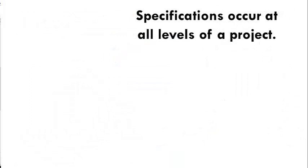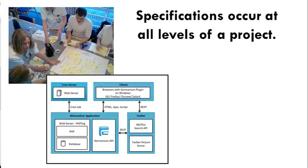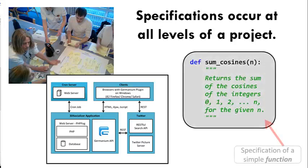Specifications occur at all levels of a project. For example, the team talks with the client to determine what the client wants the software to accomplish. The sub-team leaders work together to specify the basic architecture of the project and how the main sub-parts interact. At the finest level of detail, we specify the behavior of each function. That's the level at which you will work for the first couple weeks of this course.